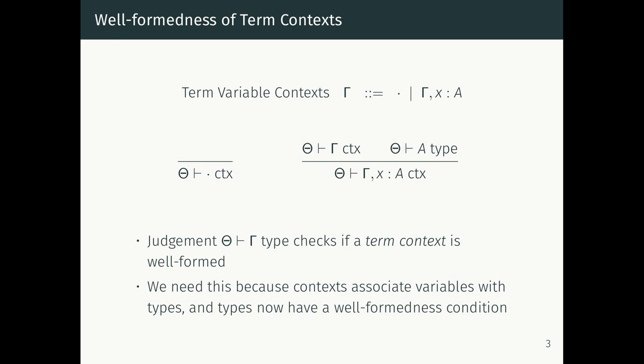Recall that a term variable context is just a list of term variables with their types. All we're doing is checking that a term context is well-formed by checking that every single type ascribed to term variables is also well-formed in theta. We need this because the contexts associate variables with types, and types now have a well-formedness condition.